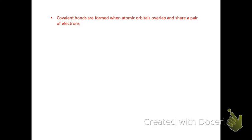We're going to go into a little bit more specific detail about forming a covalent bond between two atoms. You might want to put this in your notes: covalent bonds are formed when atomic orbitals overlap and share a pair of electrons.